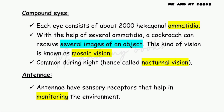Each compound eye consists of about 2000 hexagonal ommatidia. With the help of several ommatidia, a cockroach can receive several images of an object. This kind of vision is known as mosaic vision, which is also called nocturnal vision. Nocturnal means active during night time. So the type of vision in cockroach is mosaic vision and also nocturnal vision.